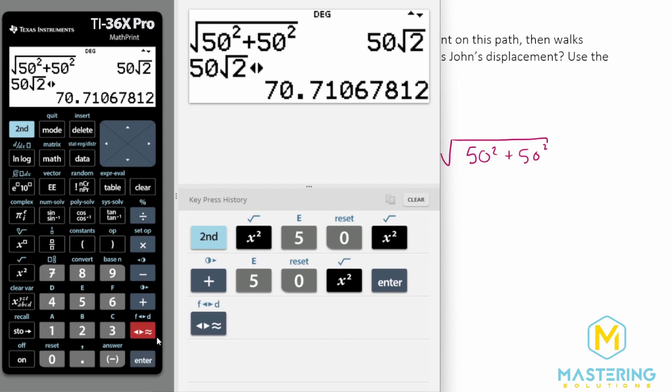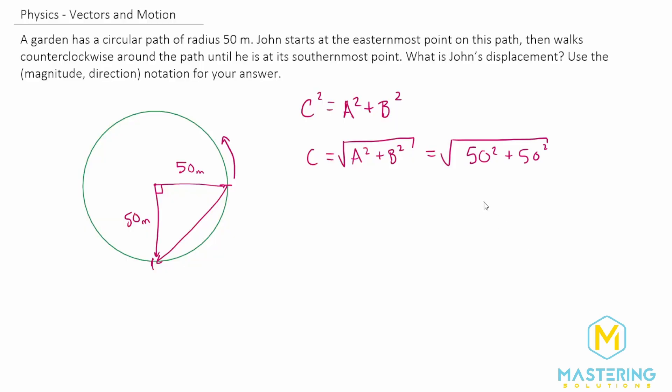Squared gives us 50√2 which is 70.71 so we will call that 71 meters. So that is 71 meters.